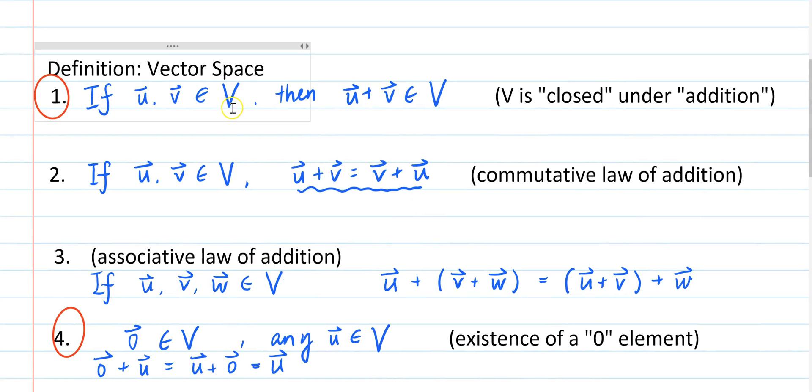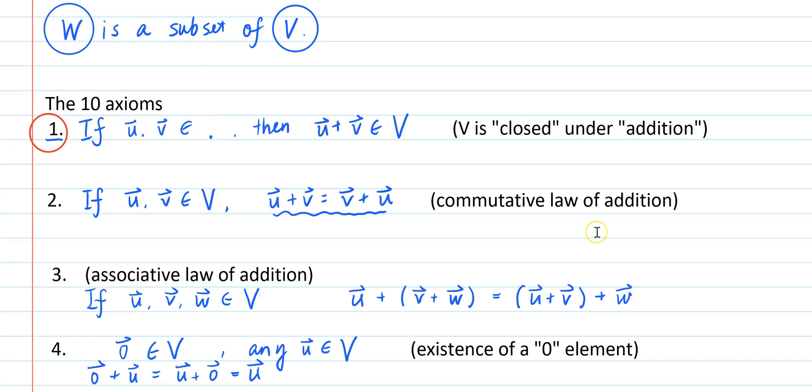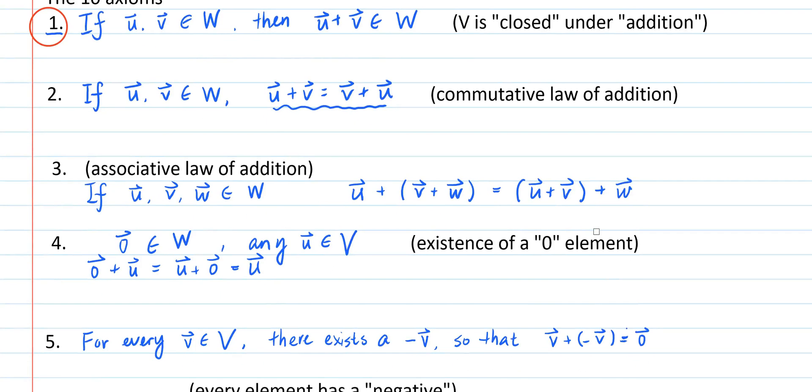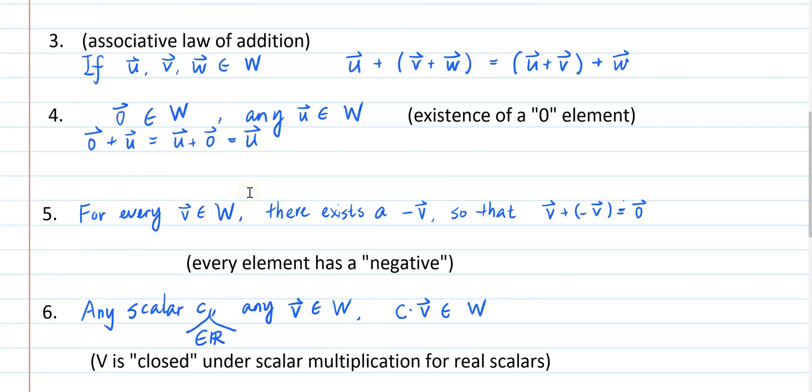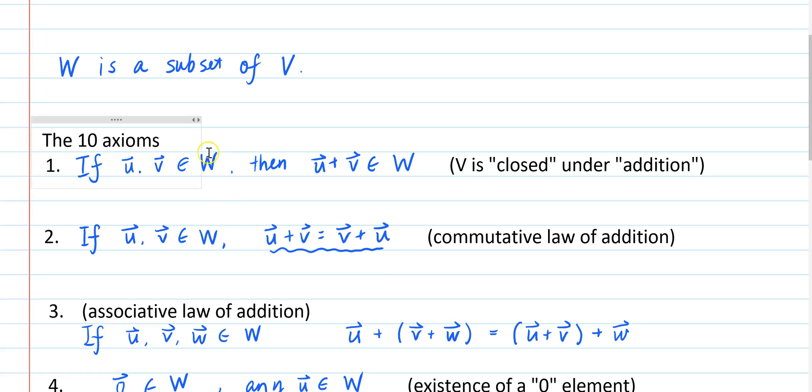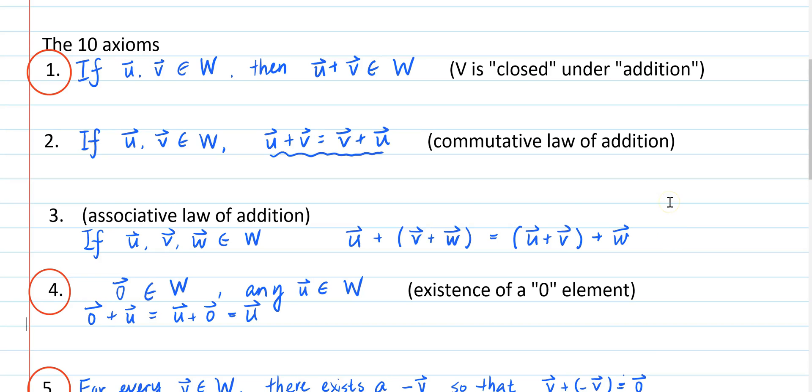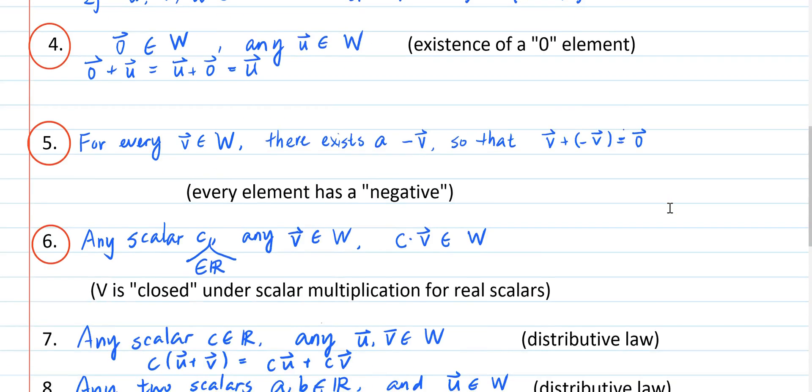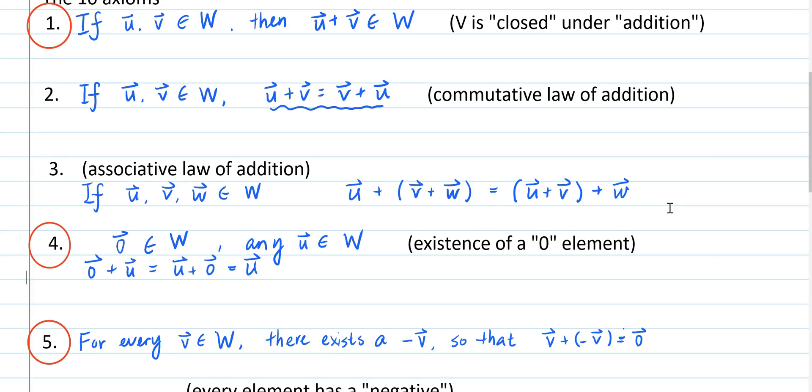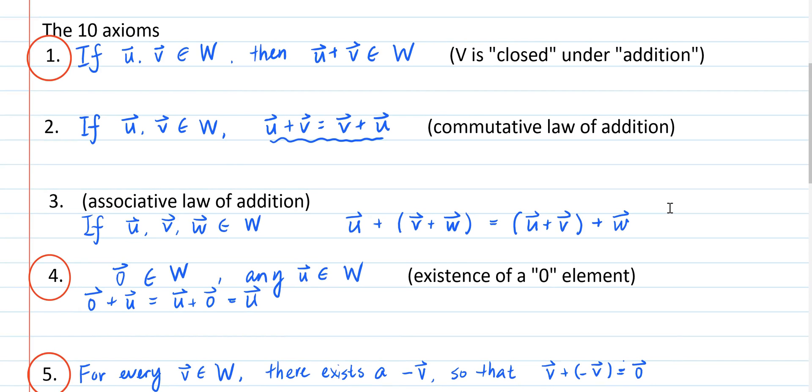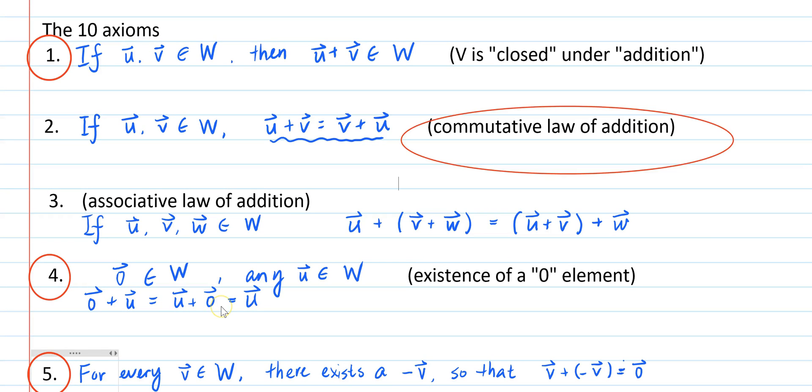For any subset W of V, we want to replace the letter V with the letter W in these axioms, and verify that these axioms are still true. That is, we know they're true for V, we want to see if they're true for W. For those axioms that are not one, four, five, six, that is, those axioms not circled, you can see that they're true for W, just because W is a subset of V.